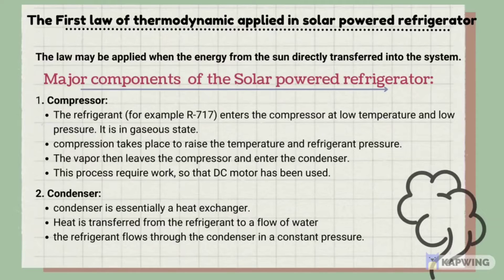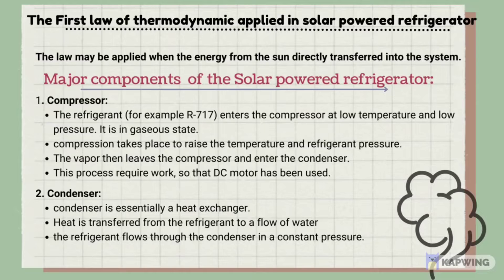First is the compressor. The refrigerant — for example, R717 — enters the compressor at low temperature and low pressure in a gaseous state. Compression takes place to raise the temperature and pressure of the refrigerant. The vapor then leaves the compressor and enters the condenser. This process requires work, so a DC motor is used.